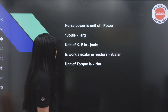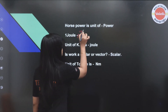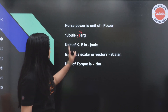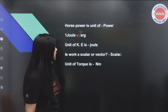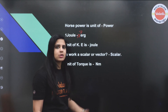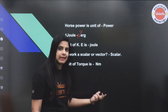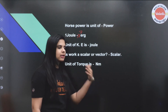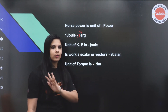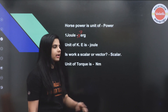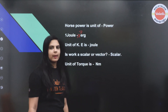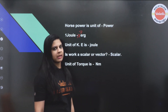One joule equals 10 to the power of 7 ergs. The unit of kinetic energy is joule. Work is a scalar quantity — it can be zero, negative, or positive. The unit of torque is Newton meter.